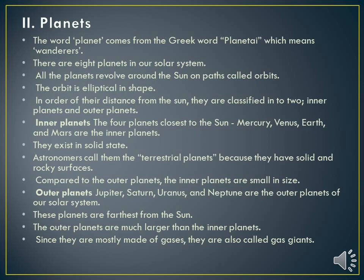Compared to outer planets, the inner planets are smaller in size. The outer planets are Jupiter, Saturn, Uranus, and Neptune. Outer planets are farthest from the sun and are much larger than the inner planets. Since they are mostly made up of gases, they are also called gas giant planets.